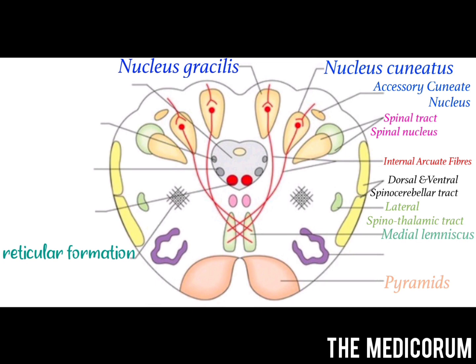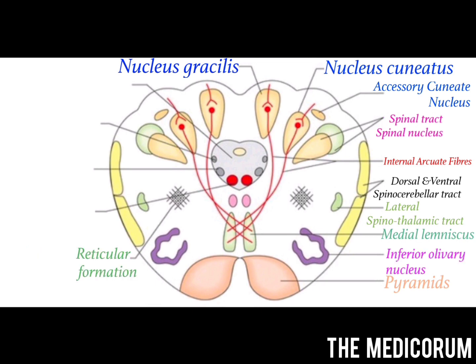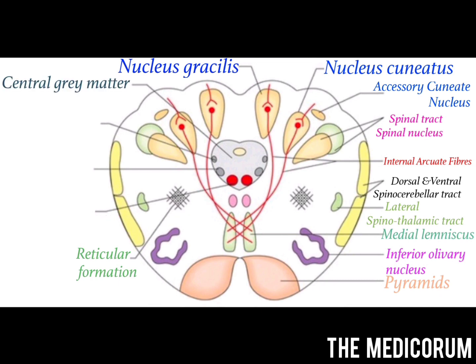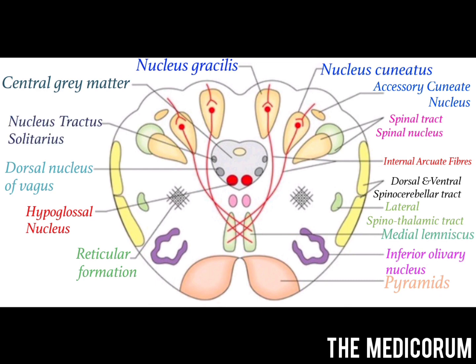Inferior to all of these tracts we have the inferior olivary nucleus. On the posterior side of the medial lemniscus there is the medial longitudinal fasciculus (MLF), which is a compact tract of nerve fibers interconnecting the 3rd, 4th, 6th, 8th, and spinal nucleus of the 11th cranial nerve. Inside the central gray matter, there are nuclei which from medial to lateral are: the hypoglossal nucleus, the dorsal nucleus of vagus, and the nucleus of tractus solitarius.